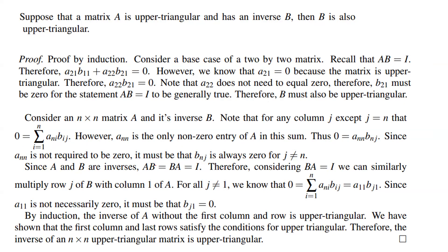Since A and B are inverses, AB = BA = I. Therefore, considering BA = I, we can similarly multiply row j of B with column 1 of A. For all j ≠ 1, we know that 0 = Σaₙⱼbⱼᵢ = a₁₁bⱼ₁. Since a₁₁ is not necessarily zero, it must be that bⱼ₁ = 0.